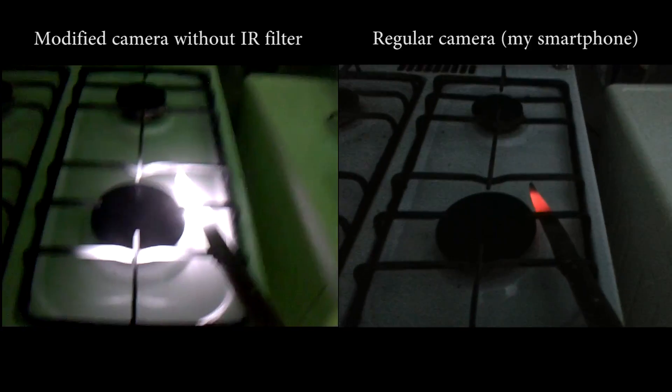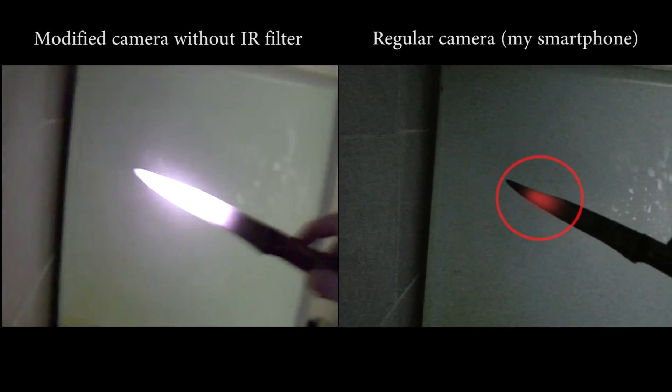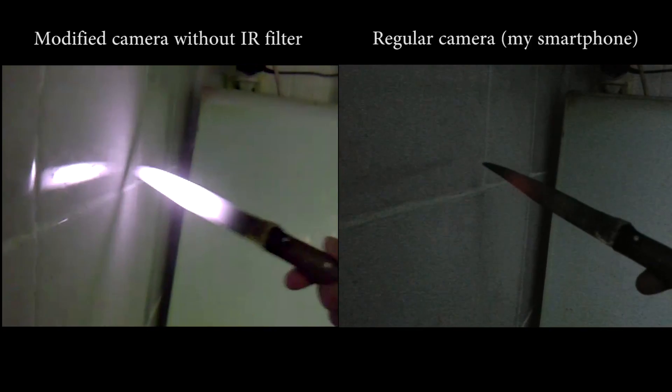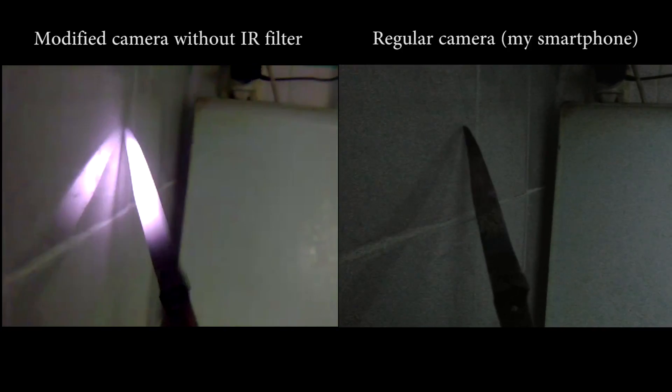See, when the metal of the knife is very hot, regular camera also can see some glowing. But when the metal is cooling down, it starts to emit light with a longer wavelength. And regular camera, just like the human eyes, stop seeing it.